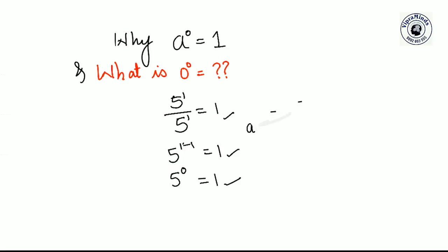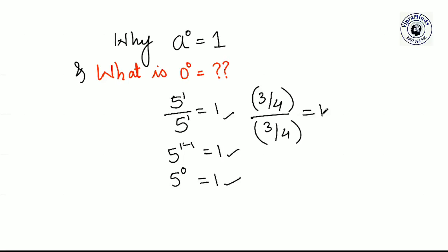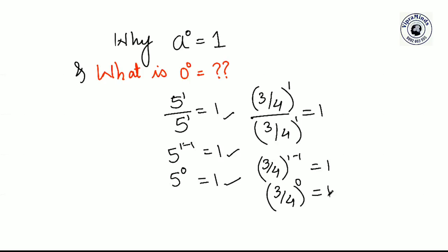You can also take a fraction. For example, 3 by 4 divided by 3 by 4 equals 1. Here the power in numerator and denominator are both 1, so applying the rule gives 3 by 4 raised to 1 minus 1, which is 3 by 4 raised to 0, equals 1. So any number with power 0 is always equal to 1. I hope you have understood that any number raised to 0 is always equal to 1.